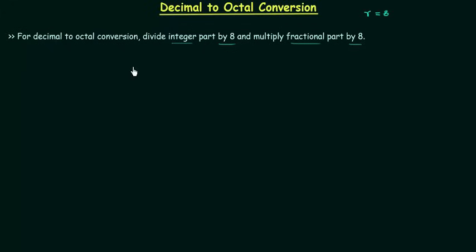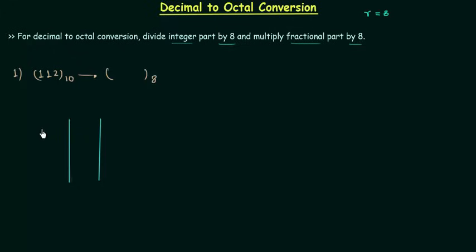In the first example I will not include the fractional part; we will include the fractional part in the second example. So let's start with example number one. The decimal number is 112 and we want the octal equivalent of 112. We have to divide 112 by 8. When you divide 112 by 8, the quotient is 14 and the remainder is 0.